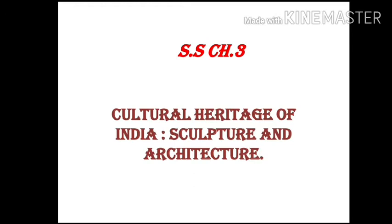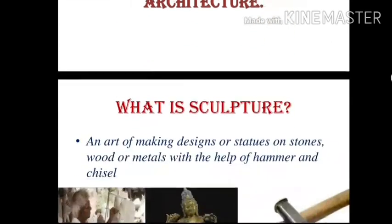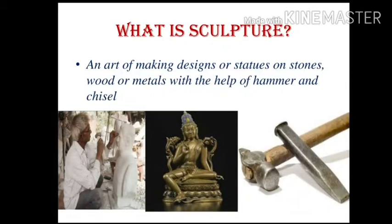In this chapter, we will discuss the contribution of ancient India in the field of sculpture and architecture. Sculpture is the art of making designs or statues on stones, wood, or metals with the help of hammer and chisel. It is a very ancient art of India, developed around 5000 years ago. Many statues and idols were carved on stones, metals, and wood by this art.